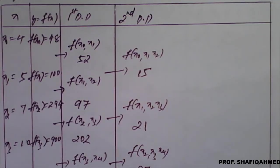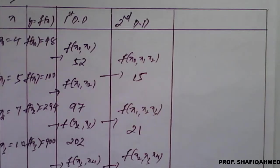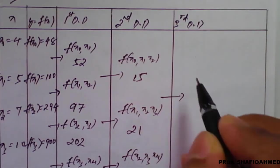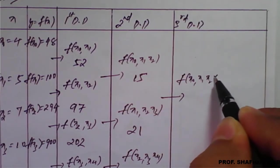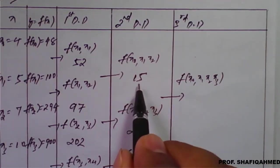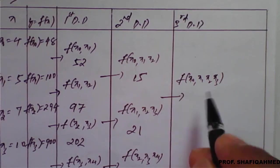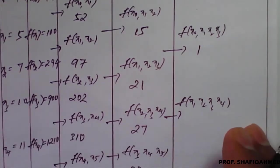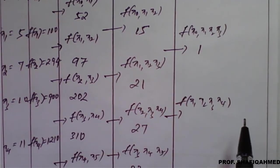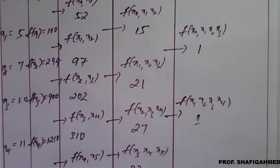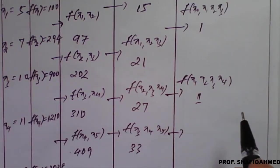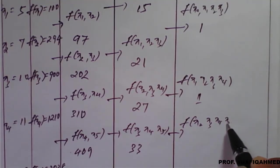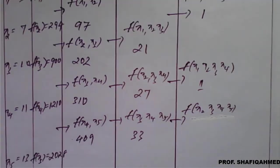Third divided difference: f(x0, x1, x2, x3) = (21 − 15) / (x3 − x0) = (21 − 15) / (10 − 4) = 1. f(x1, x2, x3, x4) = (27 − 21) / (11 − 5) = 1. f(x2, x3, x4, x5) = (33 − 27) / (13 − 7) = 1. So all third divided differences are 1.